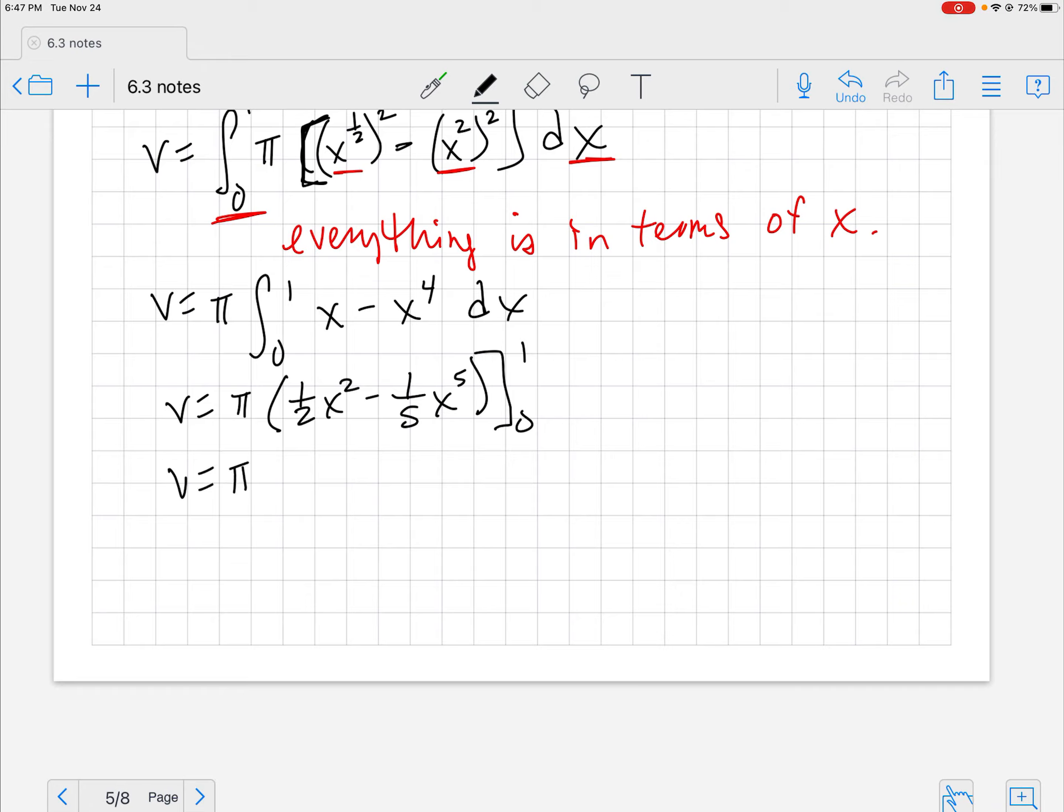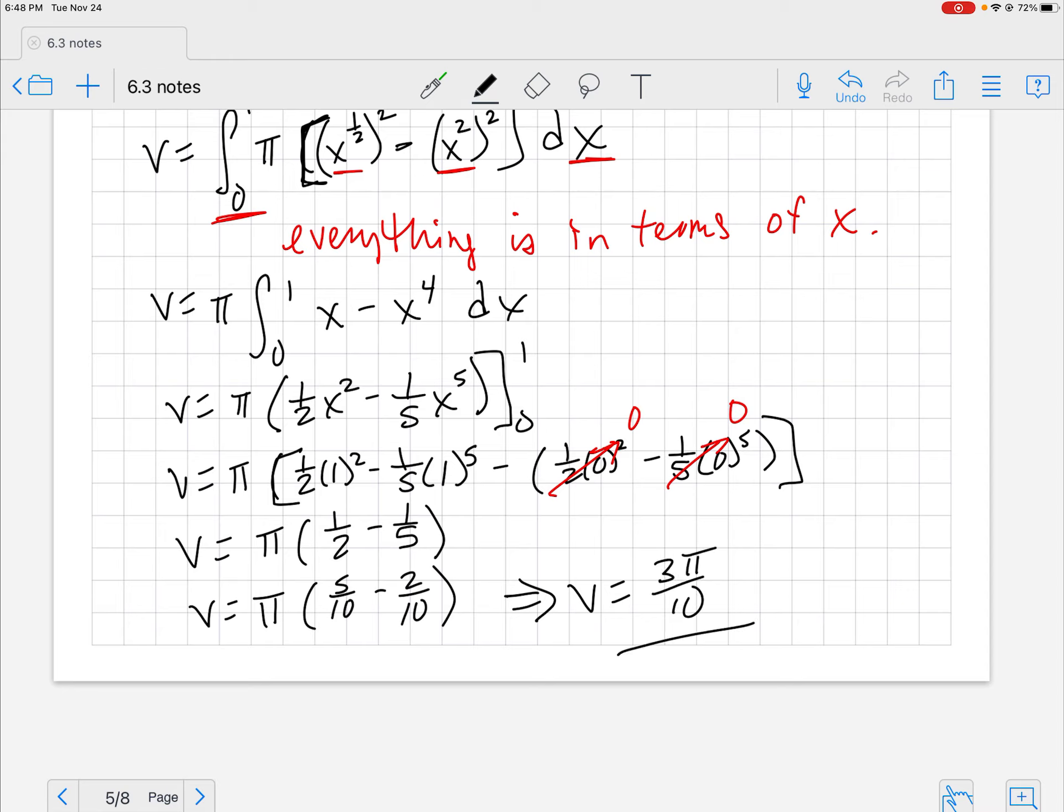And here we go. Fundamental theorem of calculus. I have 1 half times 1 squared, 1 fifth times 1 to the 5th minus, and both of these are 0. This obviously goes to 0, so I'm not really concerned about that. So volume is equal to pi times 1 half minus 1 fifth. If you get that common denominator, your volume is equal to pi times 5 tenths and 2 tenths. So my volume is equal to 3 pi over 10.